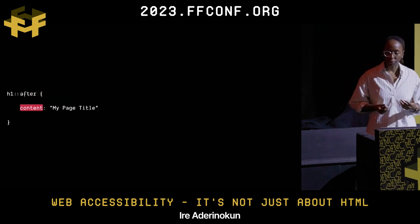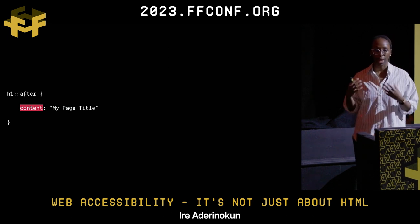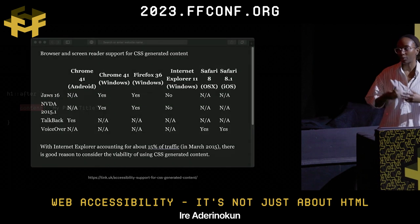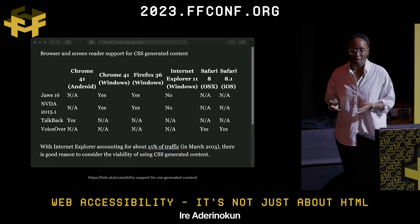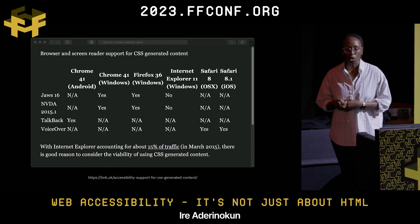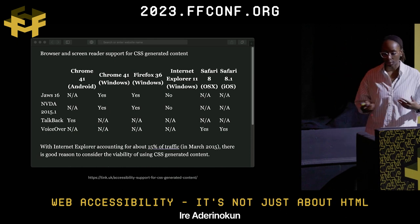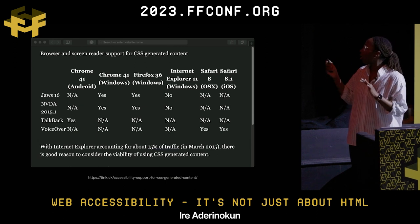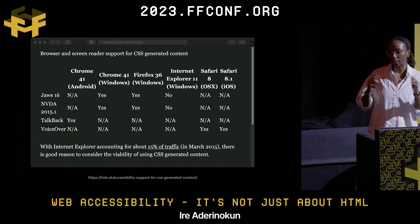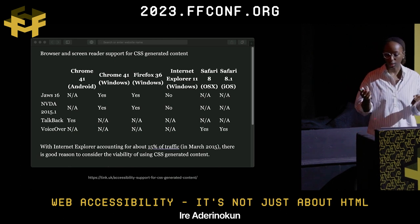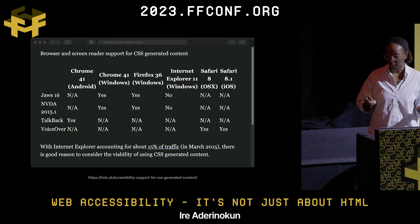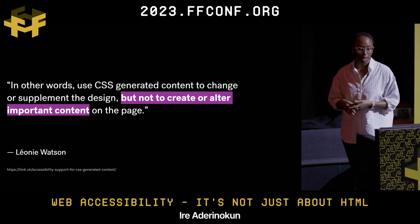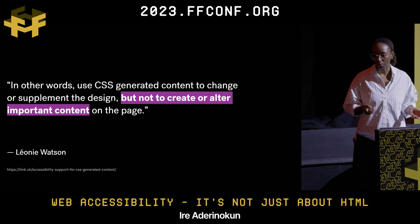One of the most explicit ways CSS is used to add content is with the actual content property. This is generally a bad idea because CSS-generated content is not always reliably accessible to assistive technologies. There's a great article that goes through the breakdown of all the assistive technologies and browsers and what supports CSS-generated content — and there's basically just a huge mix. The summary is that you shouldn't use CSS-generated content to create or alter any important information on the page.